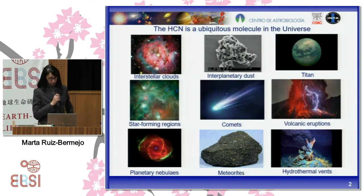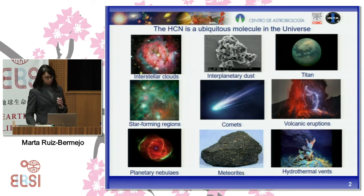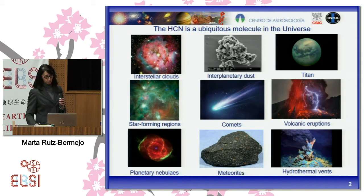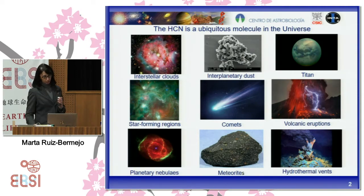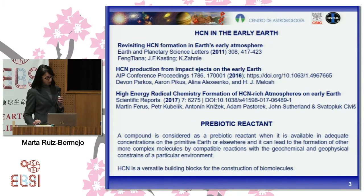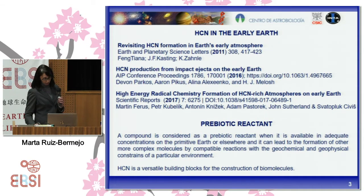Hydrogen cyanide is a ubiquitous molecule in the universe. This molecule is observed in interstellar clouds, planetary nebulae, interplanetary dust, comets, and meteorites. Its presence has been observed in the atmosphere of Titan, the largest moon of Saturn, and on Earth in gas mixtures from volcanic eruptions. Also, hydrogen cyanide would have been present in the atmosphere of the early Earth.